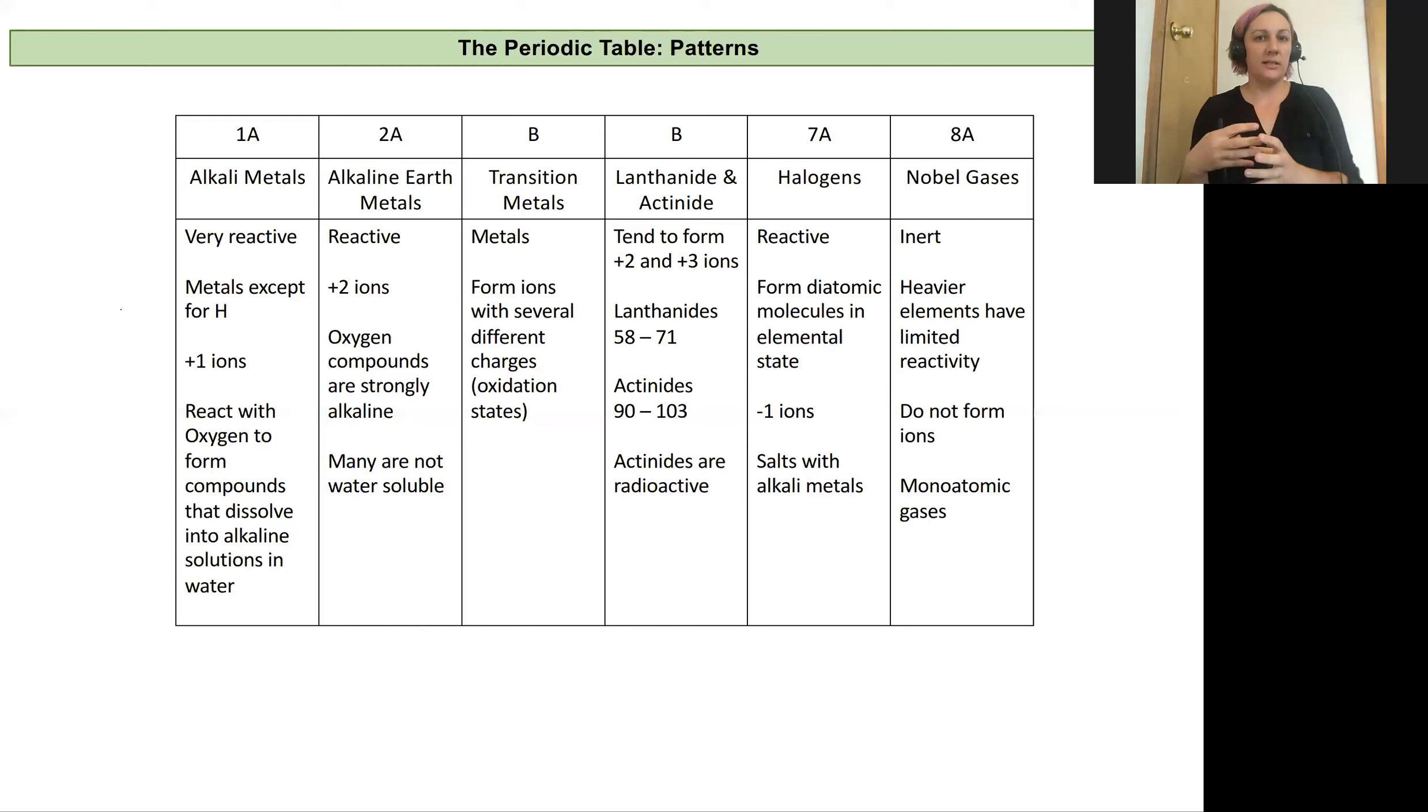Now our non-metals are going to either be tied up in compounds or they're going to have negative charges typically. So we have our halogens, which was our second to last column. They're very reactive. And they typically form diatomic molecules in the elemental state. And there'll be negative one charges always, and they'll form salts with metals typically. And then our noble gases, our last column, they're inert. So they're not ever going to be charged. The heavier ones are going to be able to have some reactivity to form compounds because they're so big. But typically they don't form bonds and they don't form ions, and they're monoatomic gases.